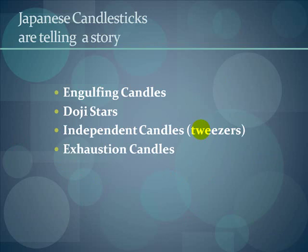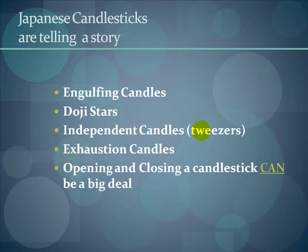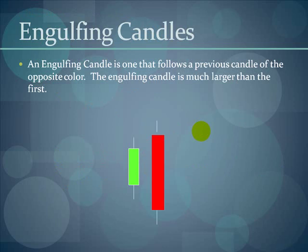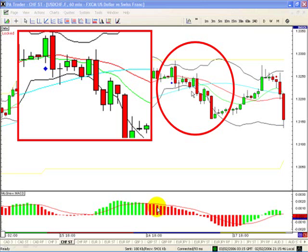A bull candle: the market opened, had a little movement to the downside, then as it came back through its opening it became a bull (green) candle, worked its way up, had some selling, and closed above its opening. A bear candle is the opposite: the market opens, goes up a little, then passes through its opening, becomes a bear (red) candle, goes all the way down, and closes below its opening. Every timeframe is different — on a 60-minute chart this candlestick represents 60 minutes; on a 5-minute chart, 5 minutes. An engulfing candle follows the previous candle of the opposite color — a big red one following green candles means they sold the currency.